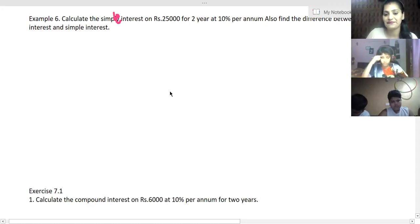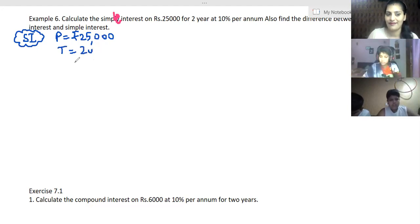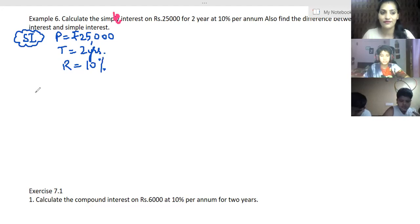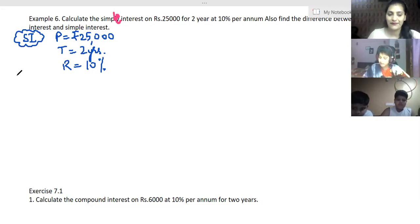We are going to calculate the simple interest. So you can tell me how do we do it? I am just writing the given things. Just tell me the formula. Yes, you tell me: simple interest is equal to P multiplied by R multiplied by T upon 100. Yes.